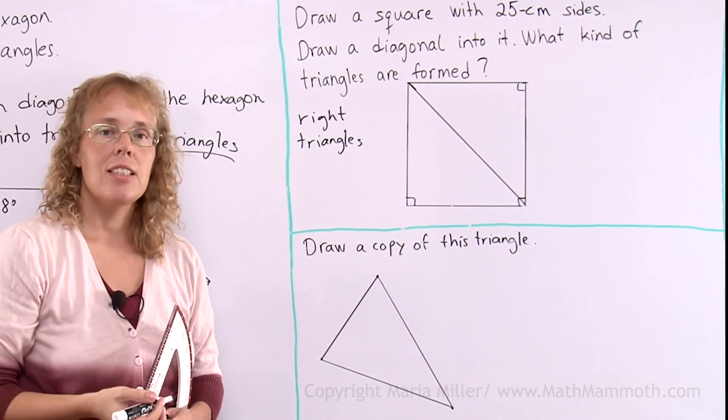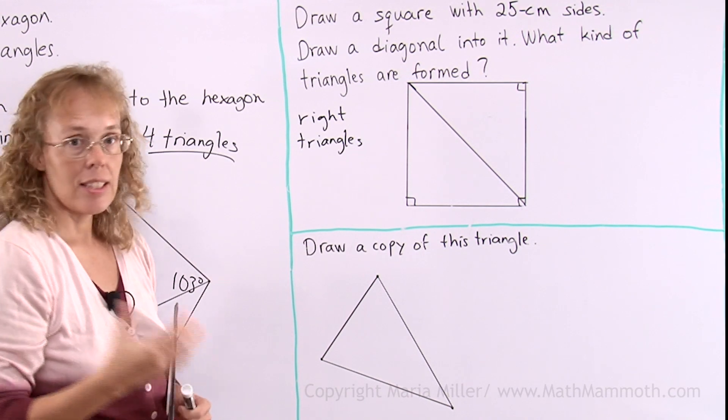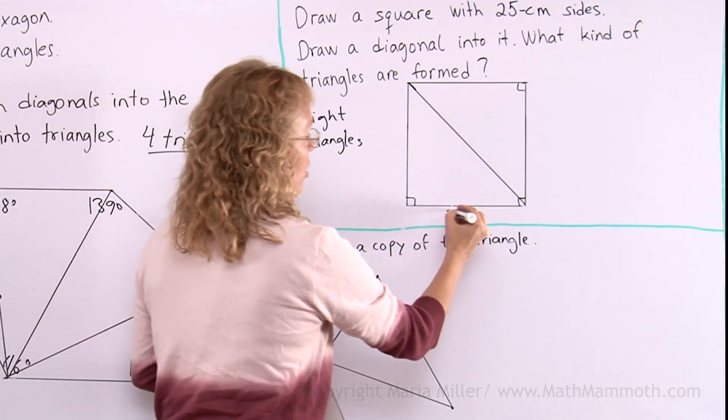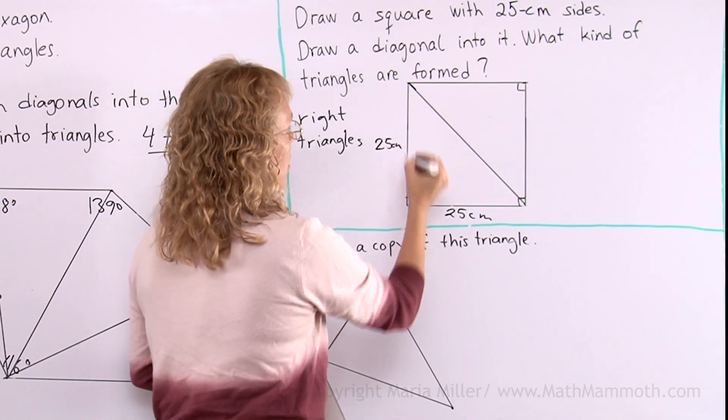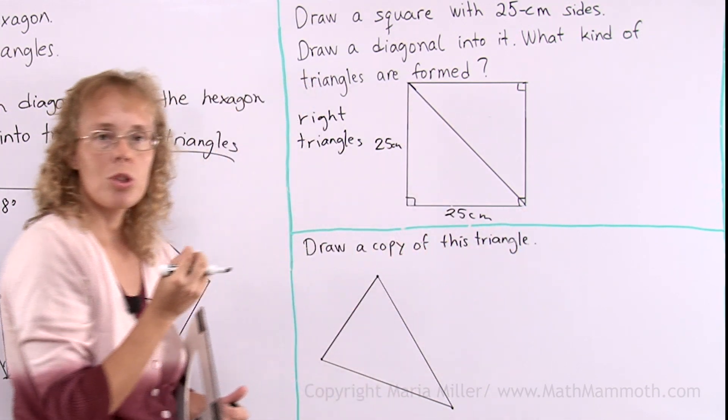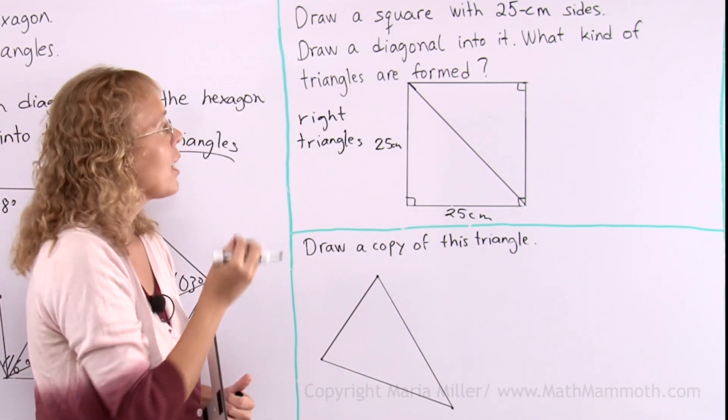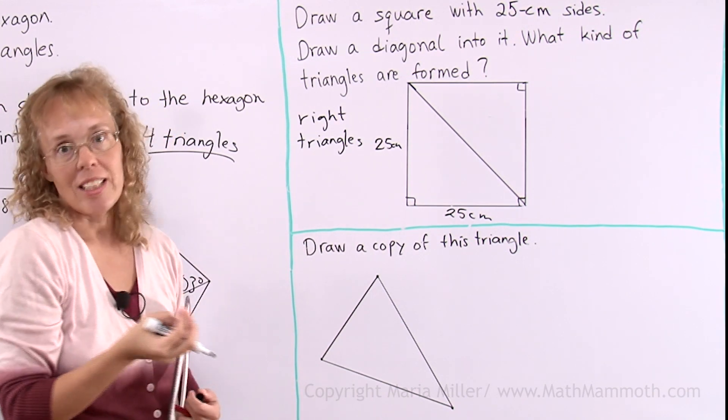Another way we can classify triangles is by their sides. And since this is a square, this is 25cm and this is 25cm. My triangle has two sides that are congruent, are the same. So it is an isosceles triangle.